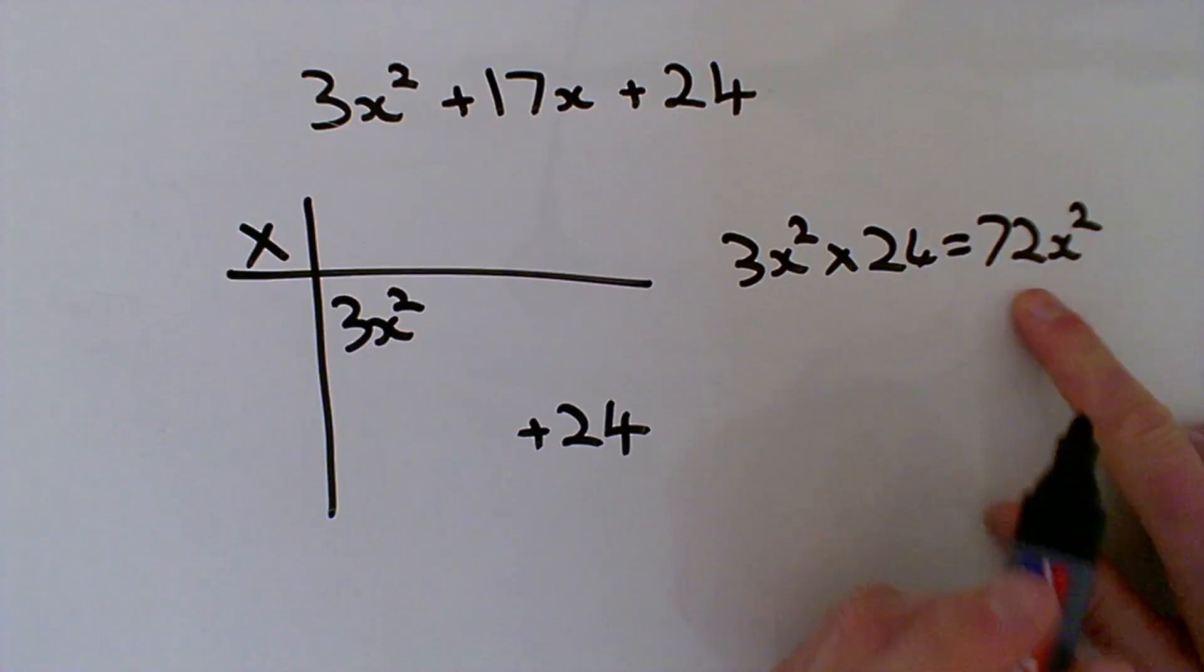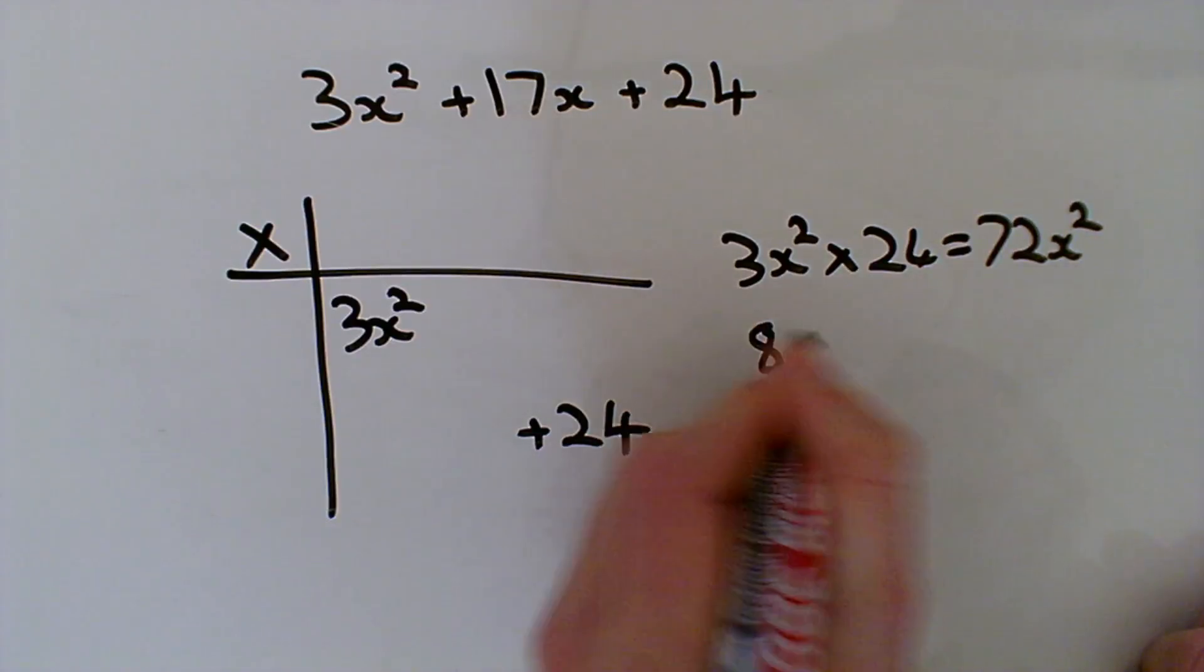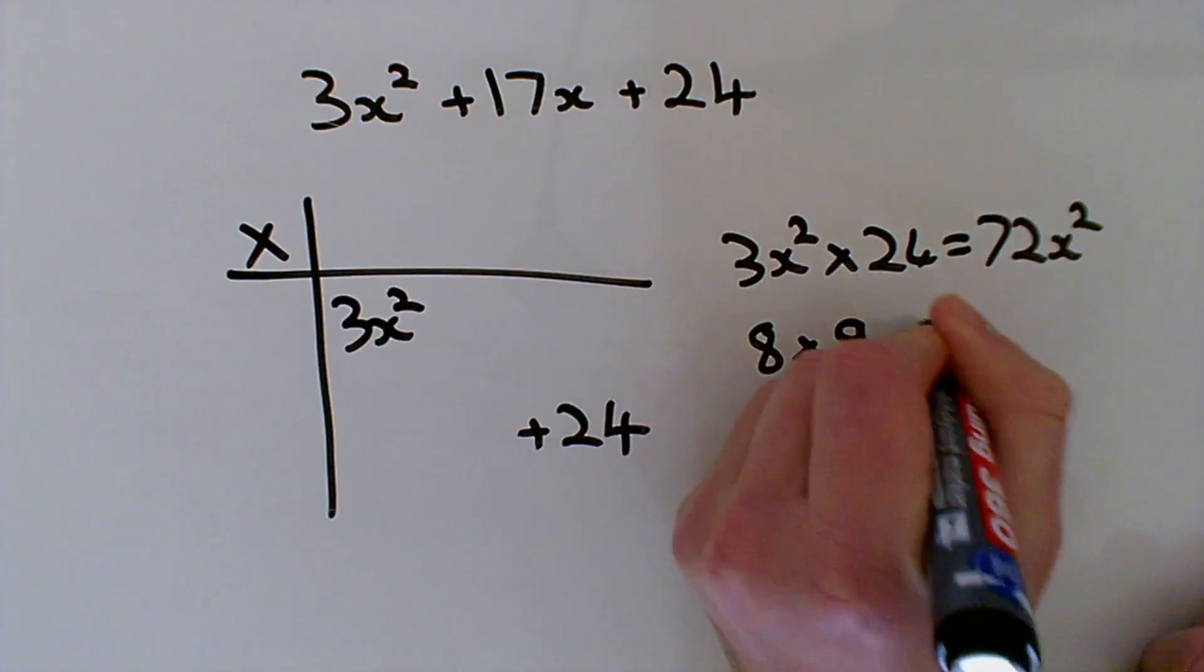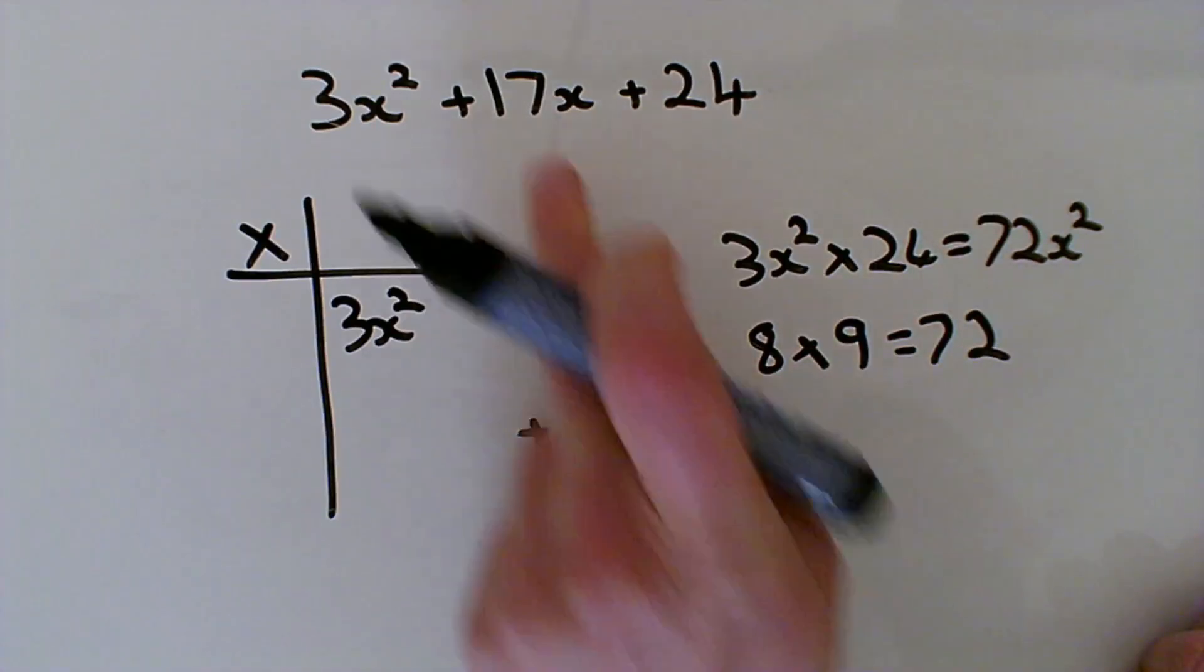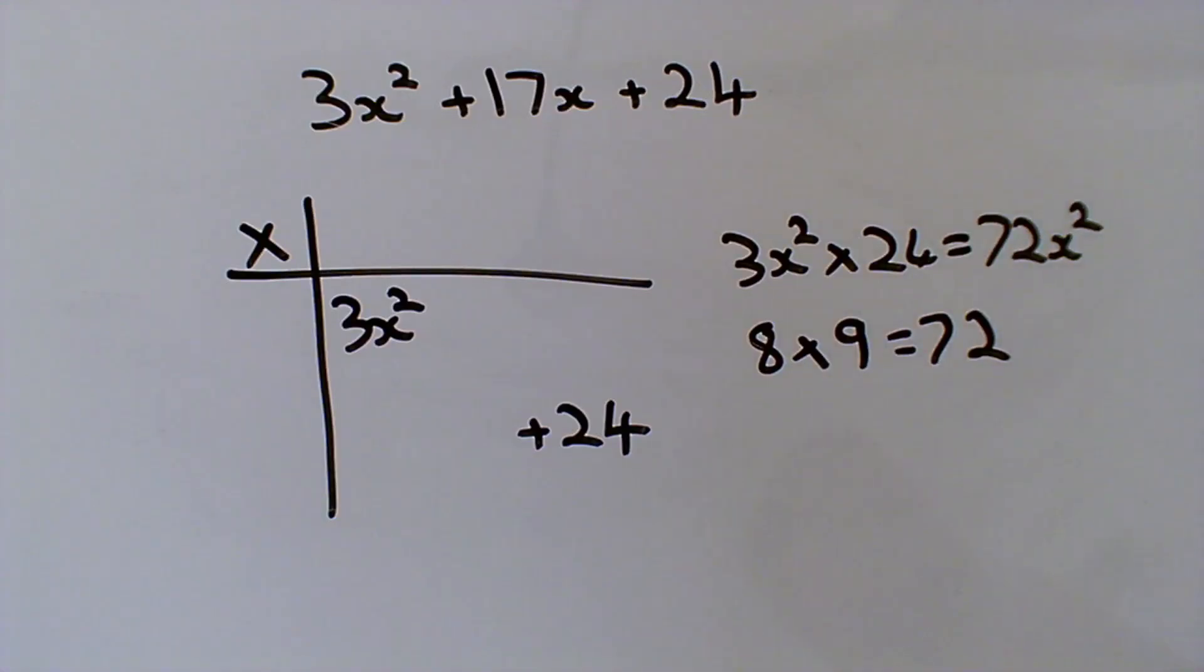Now, it turns out factors of 72, the obvious first choice, is the correct one. So, 8 times 9 gives us 72 and 8 plus 9 also give us our 17 that we're after.